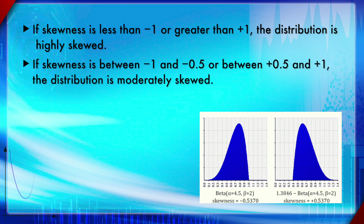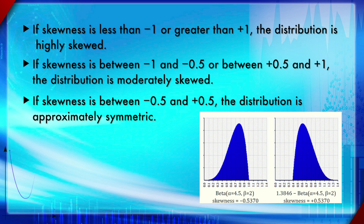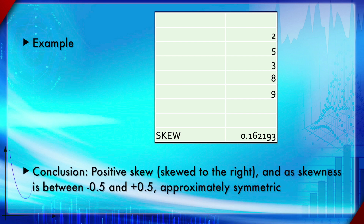If skewness is between −1 and −0.5, or between +0.5 and +1, the distribution is moderately skewed. If skewness is between −0.5 and +0.5, the distribution is approximately symmetrical. In the example shown, the skewness is positive, meaning the tail extends to the right, and since the value is between −0.5 and +0.5, the conclusion is approximately symmetric.